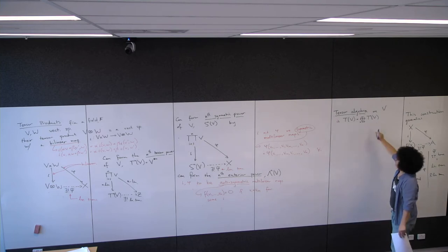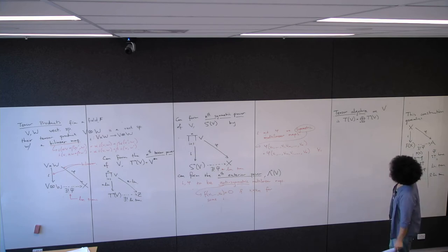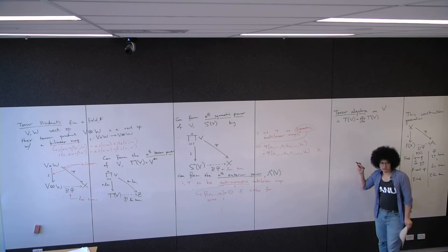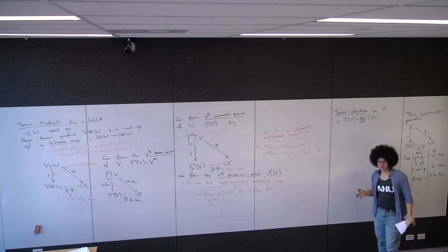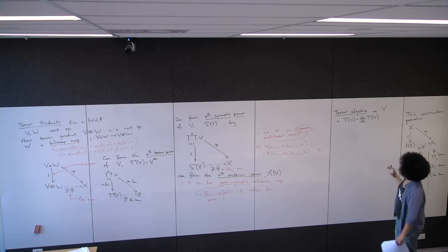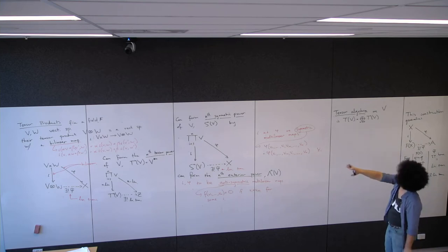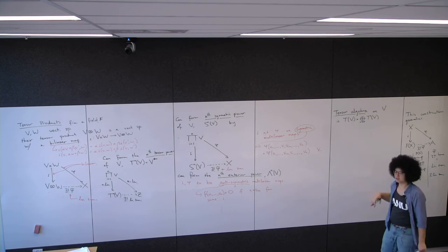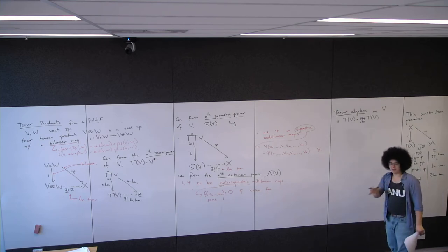For n = 0, T^0(V) is just the ground field. What do I mean by algebra? An algebra is generally a vector space with a multiplication. This is a vector space — it's a direct sum of a bunch of vector spaces — and there's some way of multiplying elements.